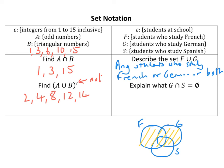Now then, for the second one, explain what G intersection S equals that funny symbol there. That funny symbol looks like a 0, essentially it is a 0. So what that means is no students study both German and Spanish.